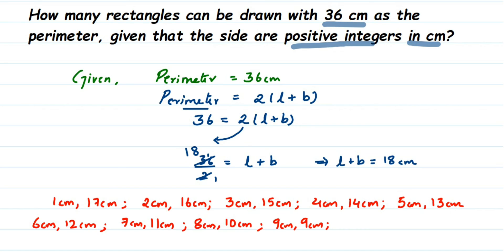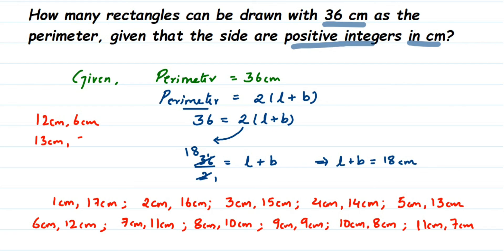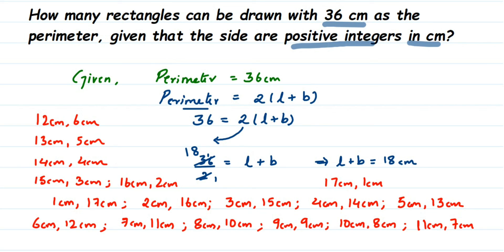Continuing: 10 cm and 8 cm; 11 cm and 7 cm — 11 plus 7 is 18; 12 cm and 6 cm; 13 cm and 5 cm; 14 cm and 4 cm; 15 cm and 3 cm; 16 cm and 2 cm; and the last combination is 17 cm and 1 cm. So we got all the different combinations where the first number is length and the second is breadth.